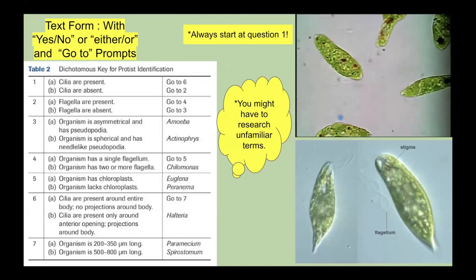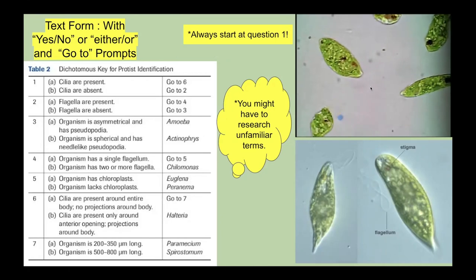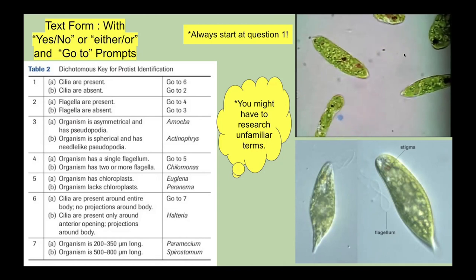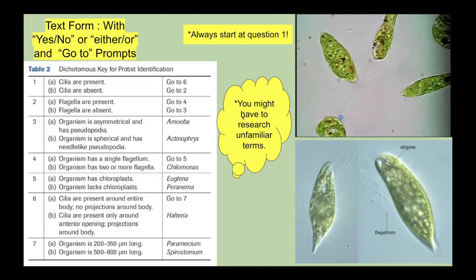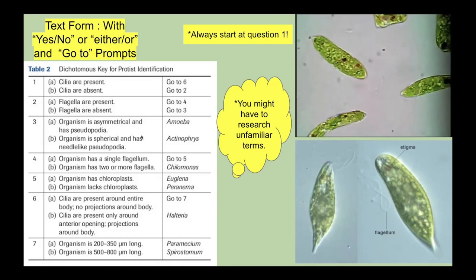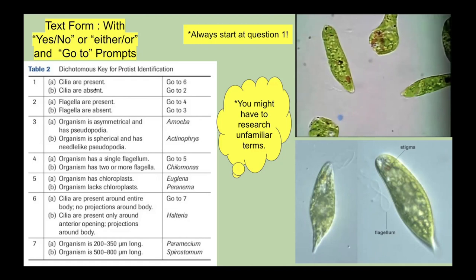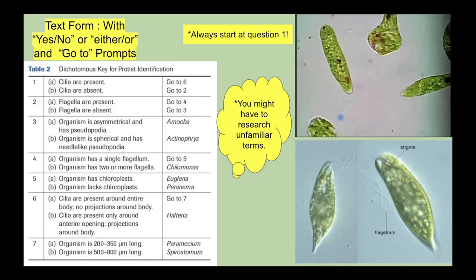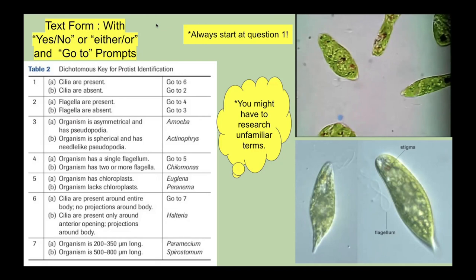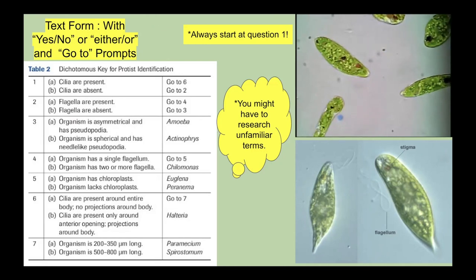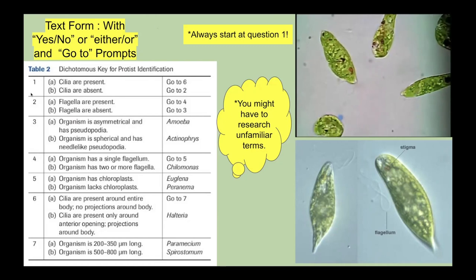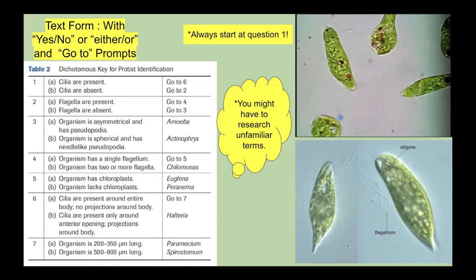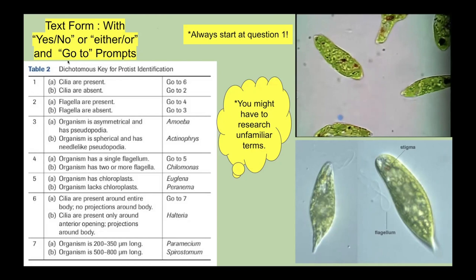We're going to practice using a dichotomous key to identify an unknown organism found in Texas ponds and lakes. This is a text form of a dichotomous key, which can have yes/no or either/or questions but always has go-to prompts. The most important thing: always start at question one. There will always be two options — choose the one that best describes your organism and continue to the indicated step.